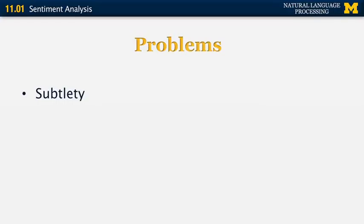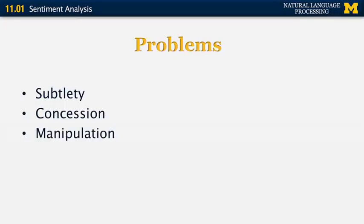There are some important problems that have to be resolved. First, problems with subtlety — sometimes people use very subtle formulations to explain what they think about a certain target or concession. For example, someone might say this product has a problem, but on average it's a pretty good product. There can also be manipulation attempts — trying to convince you that some product is good. People can also use sarcasm and irony, which are very difficult to detect.